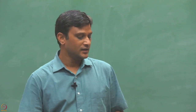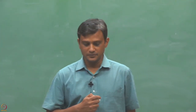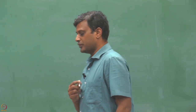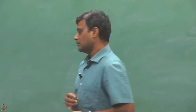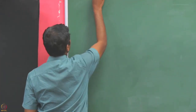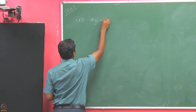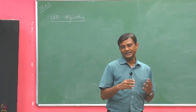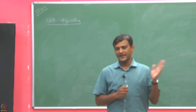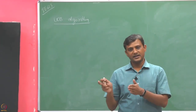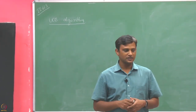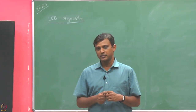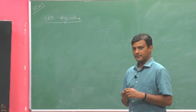We have been discussing the UCB algorithm, which we introduced briefly last time. This is one of the algorithms based on optimism in the face of uncertainty. The UCB algorithm combines both exploration and exploitation together, unlike the ETC algorithm which did exploration and exploitation separately. It combines them in each step by looking into upper confidence bounds of the arms in each round.